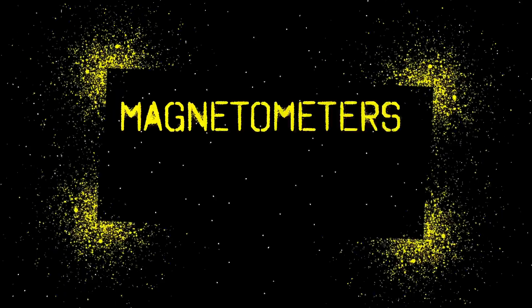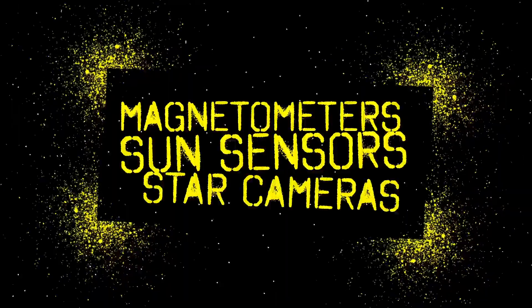What about the second category, attitude? Space is full of a lot of nothing, but there are still a few somethings that you can sense. The most common sensors are magnetometers, sun sensors, and star cameras.